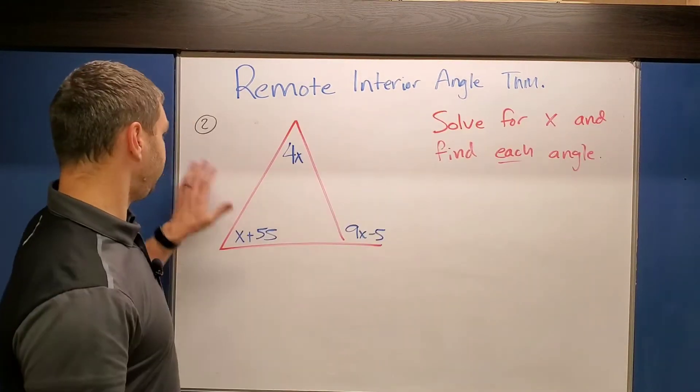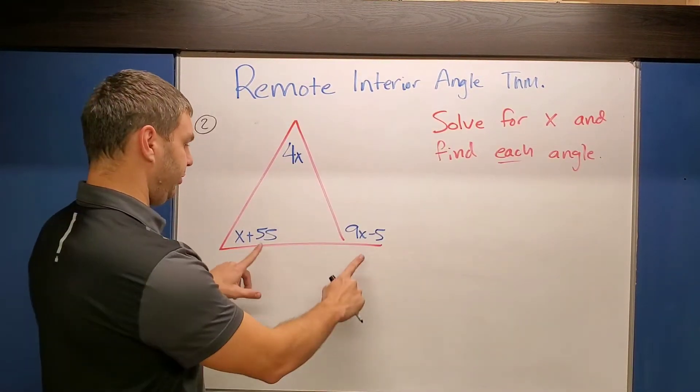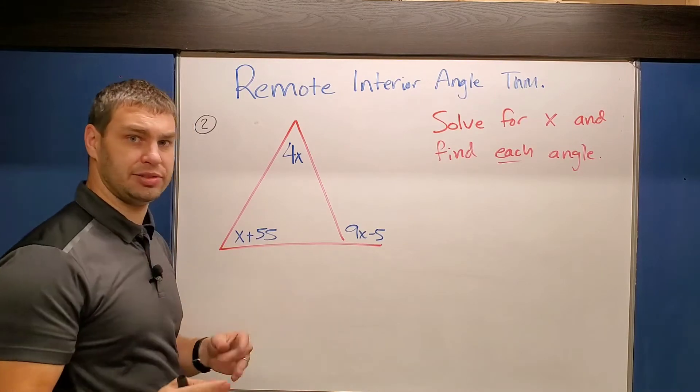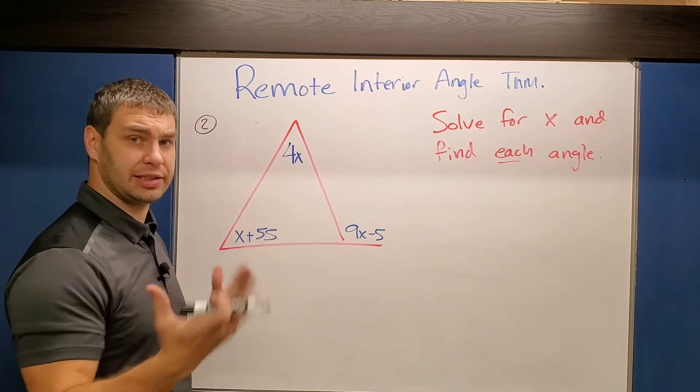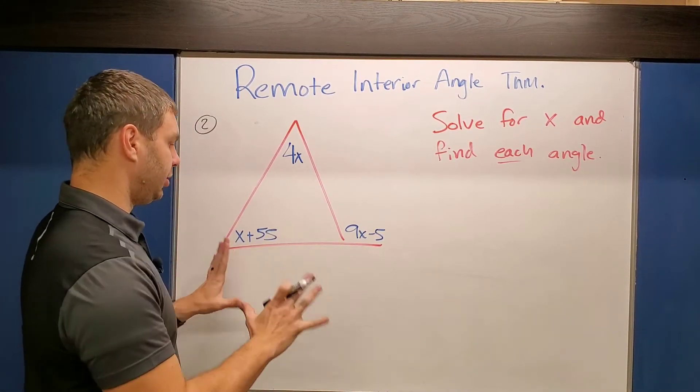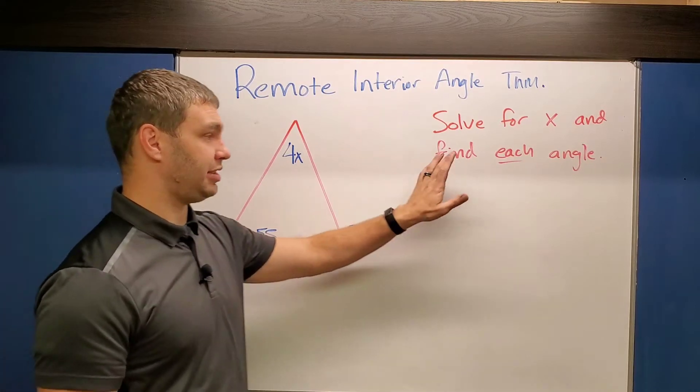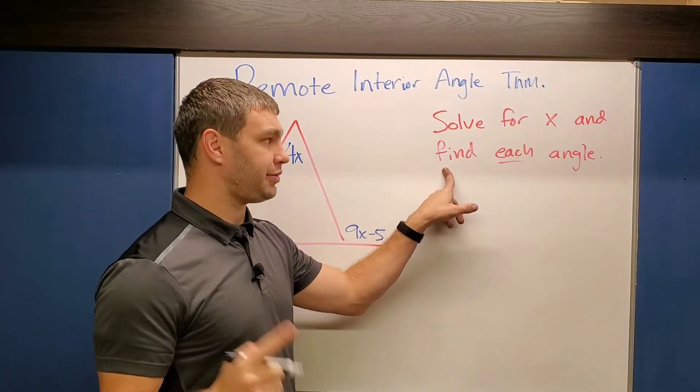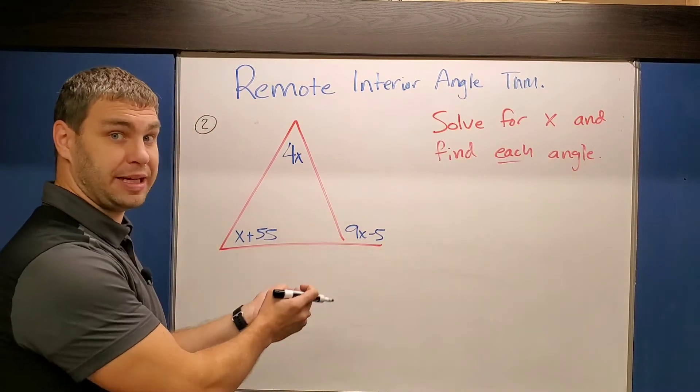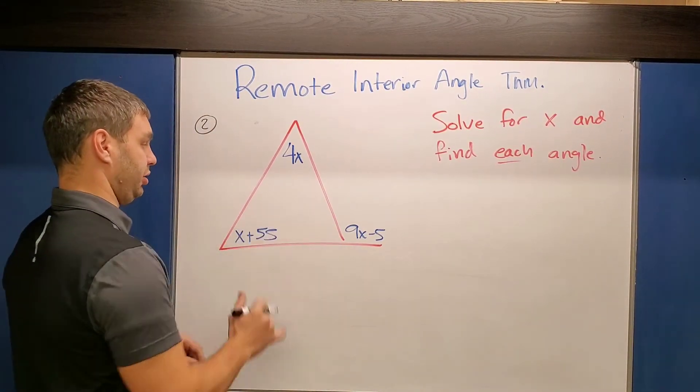All right, let's try another example. All right guys, in number two we have a little bit of a different problem here. We have a bunch of these values. In the last one we just had some of those degrees and we added up and we found X right away. Here we're gonna have to be a little bit more particular about these. All right, so it's asking us to solve for X and then we also have to find each angle measure, which means we have to plug X back in to find some of those measures.